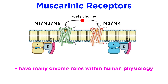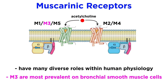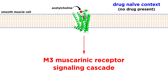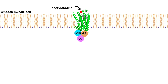These five subtypes have diverse roles all over human physiology, but in the context of bronchodilators, M3 muscarinic receptors are the most prevalent on bronchial smooth muscle cells, so that is what we will focus on here, and we will return to the other receptors in later tutorials. In a drug-naive context, tonic acetylcholine tone activates the M3 muscarinic receptor signaling cascade, leading to G-alpha-q dissociation from the G-beta–G-gamma heterodimer.